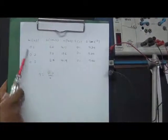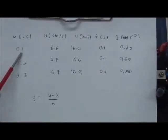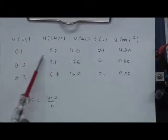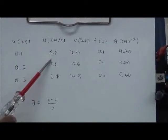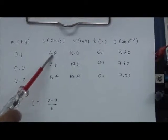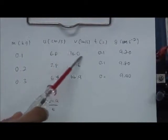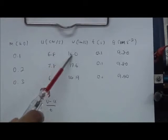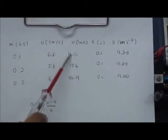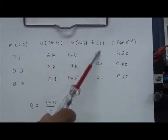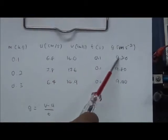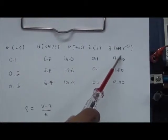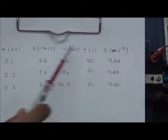This is the data that we got. By using 0.1 kilogram, we got 6.8 centimeter per second for the initial velocity and 16.0 for the final velocity, and we got 9.2 meter per second for the gravitational force.